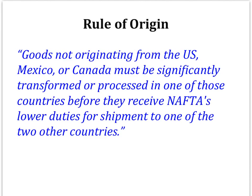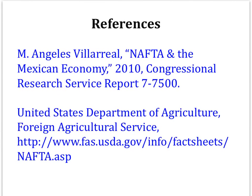That is, how much of the raw materials had to be produced in Mexico? How much of the manufacturing of the t-shirt had to take place in Mexico? More generally, the guideline is that goods not originating from the United States, Mexico, or Canada must be significantly transformed or processed in one of those countries before they receive NAFTA's lower duties for shipment to one of the two other countries. There's a lot of information available about NAFTA on the web. The information in this video came from Ángeles Villabreal's NAFTA in the Mexican Economy, which was a 2010 Congressional Research Service report, as well as the United States Department of Agriculture fact sheets about NAFTA.